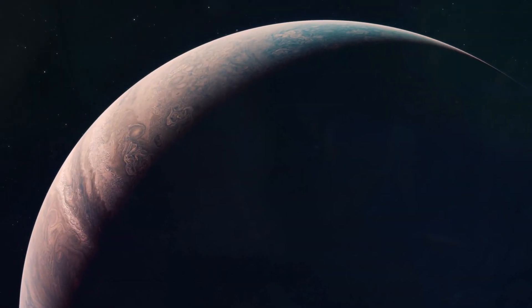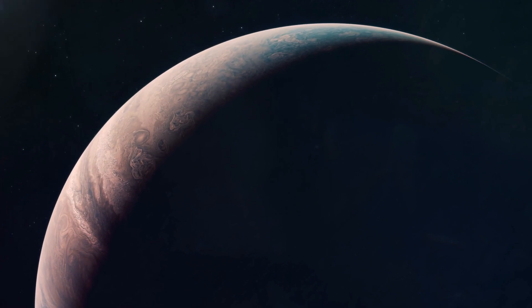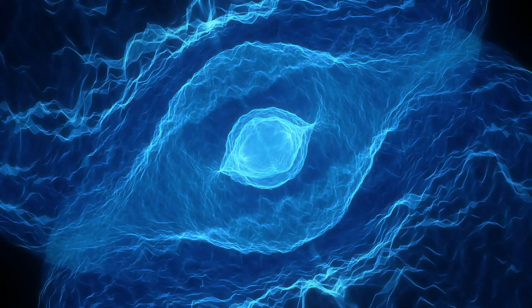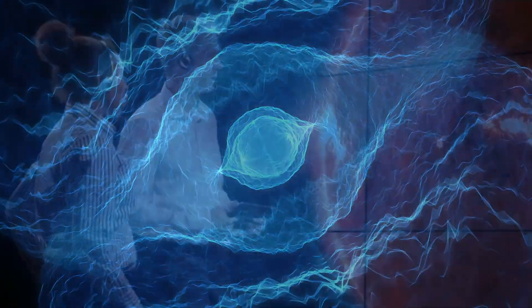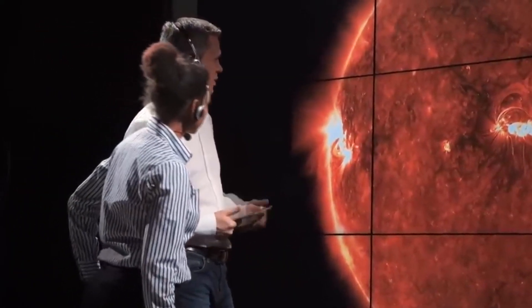The peculiar thing is that AB Aurigae B is coming together as the result of a top-down gravitational collapse of massive clouds of gas. This is an extremely rare occurrence.